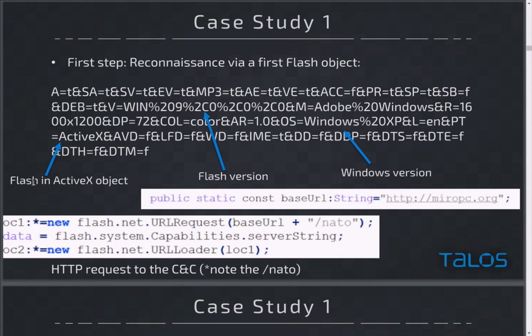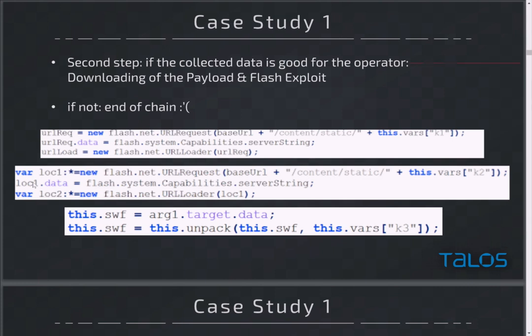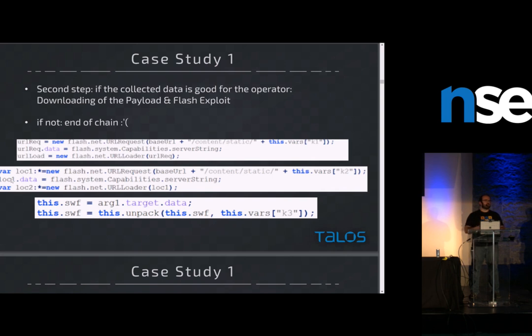Additionally, the attacker gets the Flash version, so he's able to provide an exploit that matches perfectly the Flash version of the target. And last, he gets the Windows version, so he can have an exploit that matches exactly the Windows version. So this Flash object's first step is simply to send data about the infected machine. If the data is correct for the bad guys, you will then receive a second Flash object loaded in memory - this one contains the exploit used to drop the final malware and execute it. If you don't have good data, you won't receive the final payload.